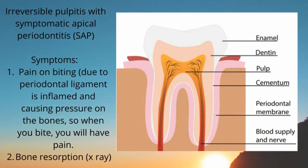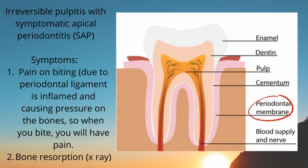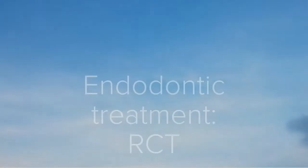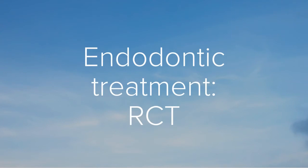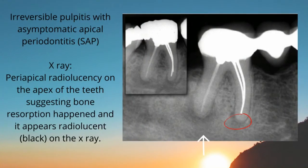Another diagnosis for irreversible pulpitis is with symptomatic apical periodontitis. Here the periodontal ligament is inflamed and causing pressure on the bone, so the main symptom is pain on biting. On X-ray you will see a radiolucency at the apex of the tooth indicating bone resorption. If the radiolucency is small, this is irreversible pulpitis with asymptomatic apical periodontitis and the patient will most likely not experience pain on biting.